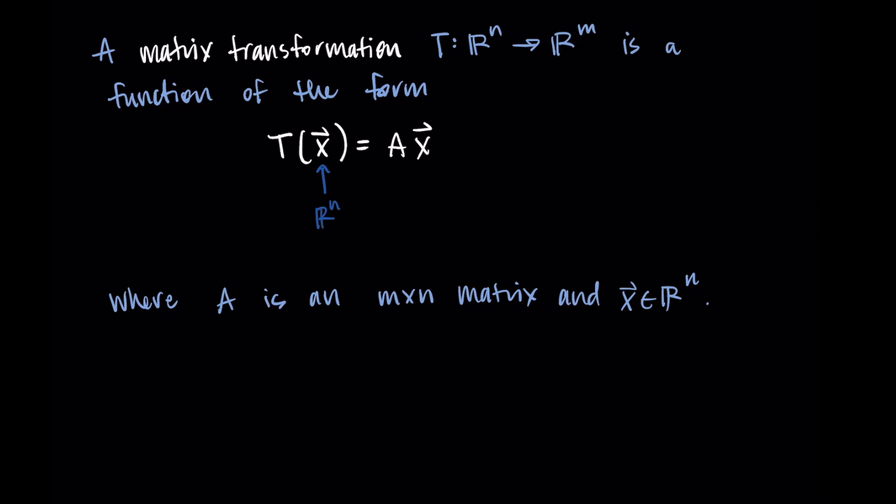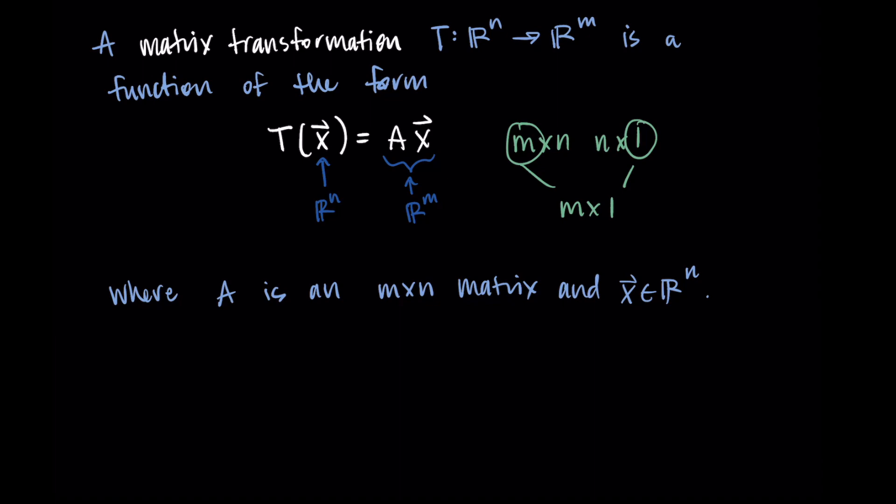Then we're outputting this matrix vector multiplication. So we have A times x, and we can figure out what the dimension of that will be. So A is m by n. Then the vector has n components. And so our resulting vector is m by 1. So it has m dimensions. So that's where our range is. We're outputting a vector in R^m.